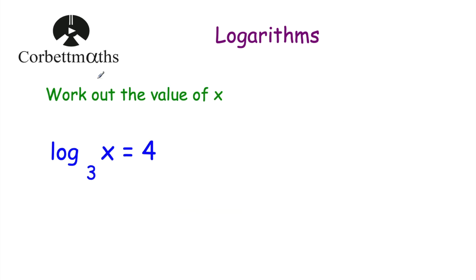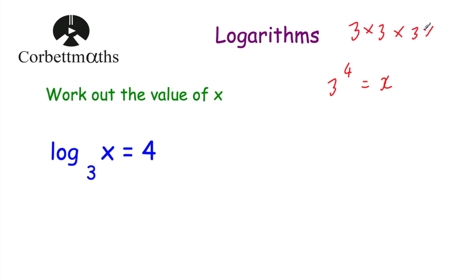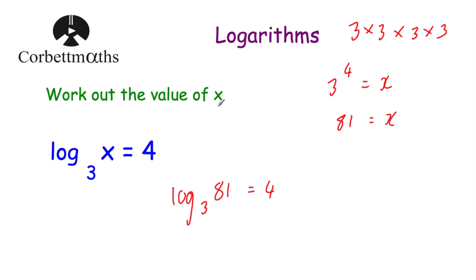Question 5: work out the value of x. We have log to base 3 of x is equal to 4. We have the base and the power, so we work out x: 3 to the power 4 equals x. 3 times 3 times 3 times 3 — 3 times 3 is 9, times 3 is 27, times 3 is 81. So x equals 81. Log to base 3 of 81 equals 4, confirmed since 3 to the power 4 is 81.